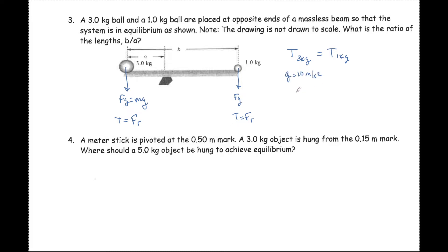That equals the weight of the small ball, 10 newtons. But R is not equal to B for this torque. It's from the focal point, so the actual R is B minus A. So that makes this 10B minus 10A equals 30A.